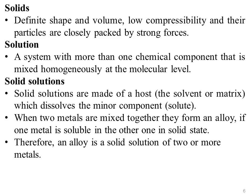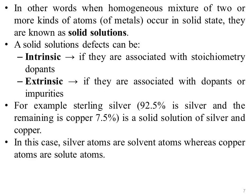Solid solutions are made of hosts which dissolve the minor component, that is the solute. The ability to dissolve is called solubility. When two metals are mixed together, they form an alloy if one metal is soluble in the other in the solid state. Therefore, an alloy is a solid solution of two or more metals. A solid solution is formed when two metals are completely soluble in both liquid state and solid state. In other words, when a homogeneous mixture of two or more kinds of atoms or metals occurs in the solid state, they are known as a solid solution.